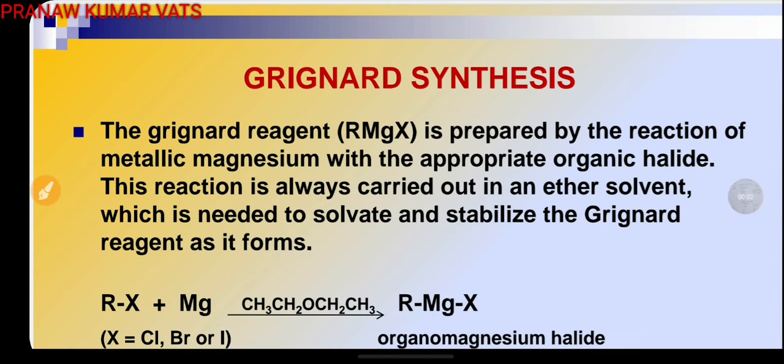Good morning everyone, today we are going to study Grignard synthesis. The Grignard reagent RMgX is prepared by the reaction of metallic magnesium with the appropriate organic halide. This reaction is always carried out in an ether solvent, which is needed to solvate and stabilize the Grignard reagent as it forms.